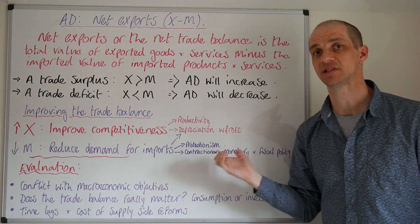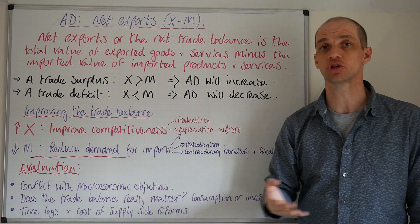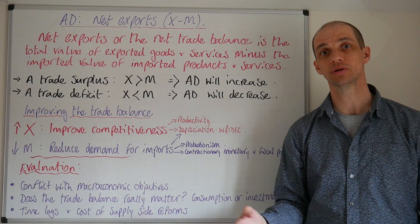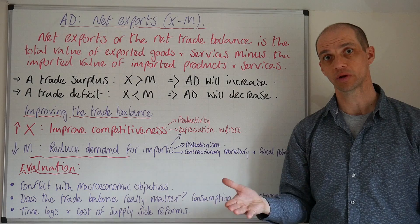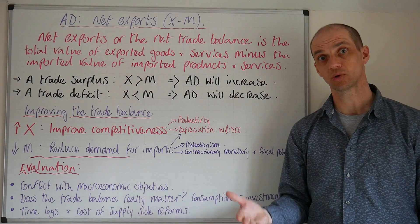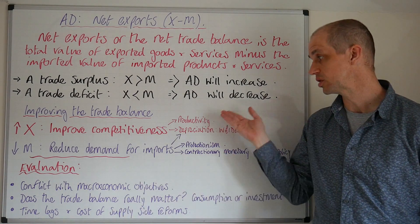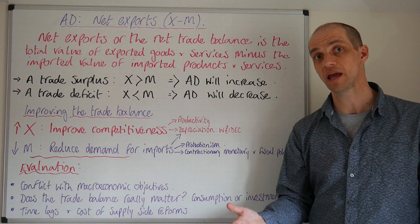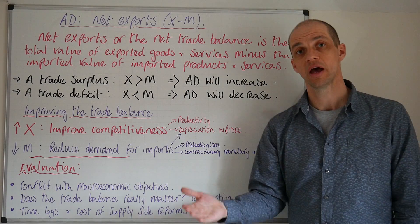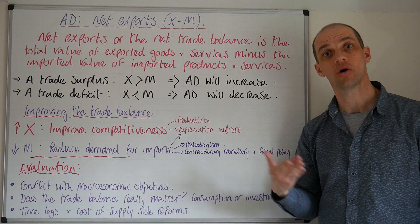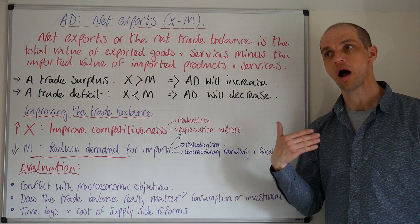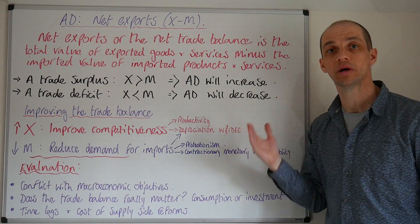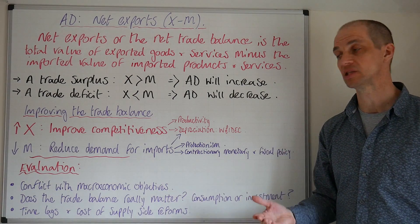Firstly, improve competitiveness. You can try to raise productivity through investment in capital goods to improve the supply side of your economy and reduce the cost of producing those exports. Alternatively, focus on developing labour productivity so that your workforce is more productive and can generate, design, and develop more competitive, higher value-added goods, which will really help boost international competitiveness.